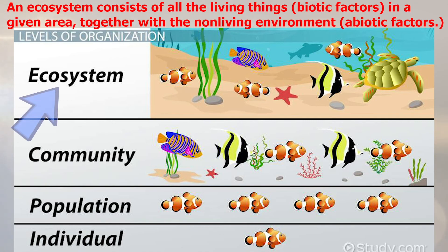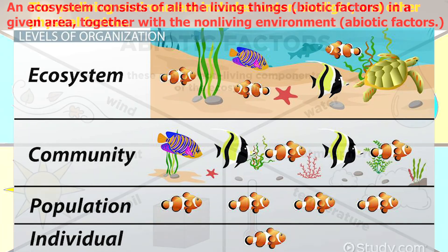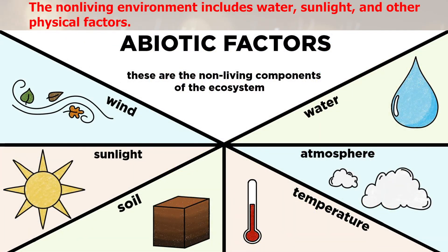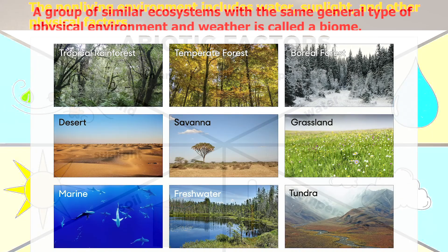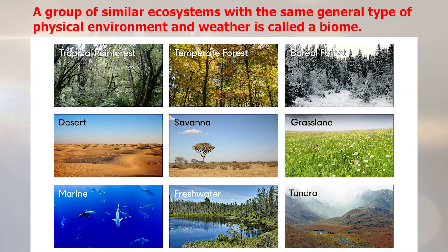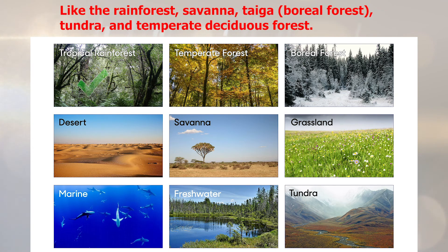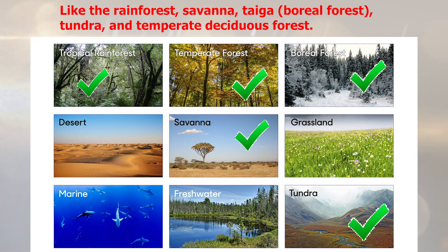An ecosystem consists of all living things, which are called biotic factors, in a given area, together with the non-living things, which are called abiotic factors. The non-living environment includes water, sunlight, and other physical factors. A group of similar ecosystems with the same general type of physical environment and weather is called a biome, like the rainforest, savannah, taiga, tundra, and temperate deciduous forest.